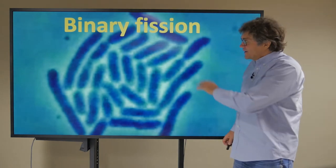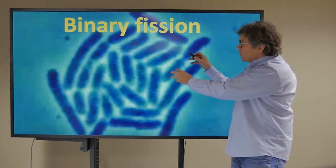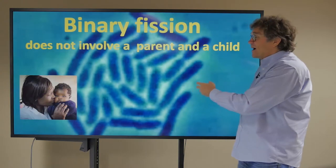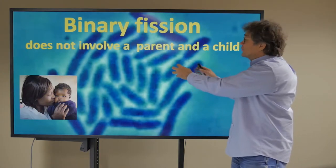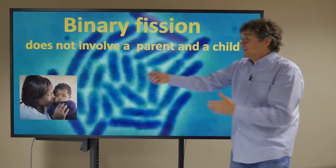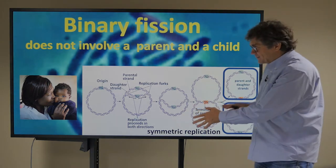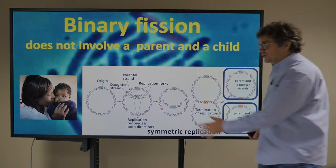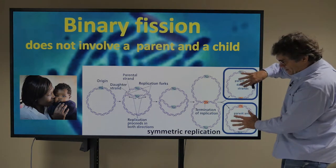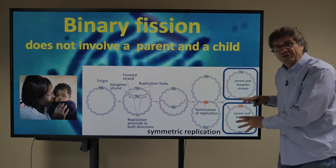Remember binary fission. These bacteria were getting long and then dividing into two. There was no such thing as a mother that's older than a daughter. Bacterial fission does not involve a parent and a child. We have symmetric replication in which one cell turns into two, but there's no way to say this is the parent and this is the daughter — they're just equally old. They don't get old.